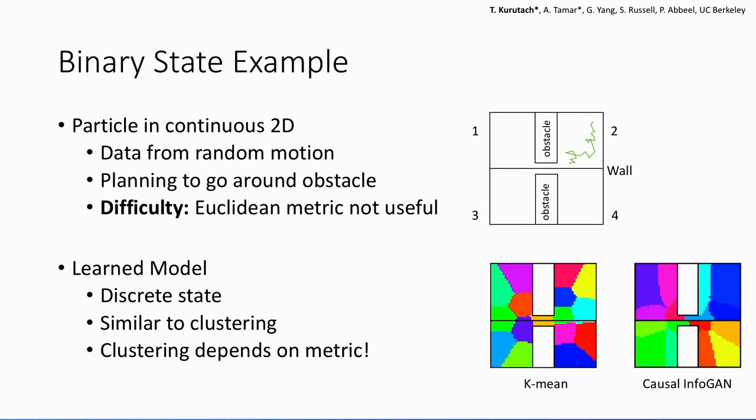So one way to do planning here is by clustering. If we can cluster the states, then we can do planning in this discrete space. You can think of it as a graph with some connections and find a plan. So if we apply k-means, you would end up clustering observations that are across the wall.